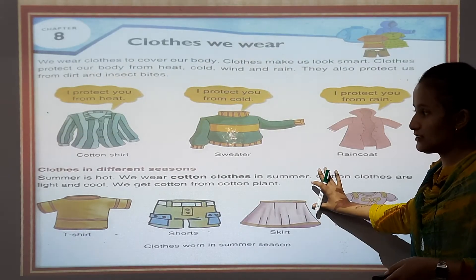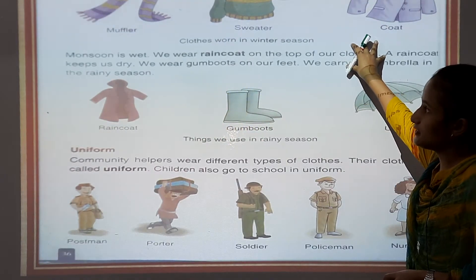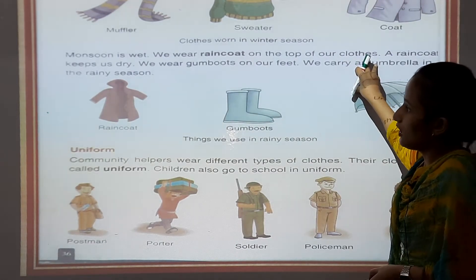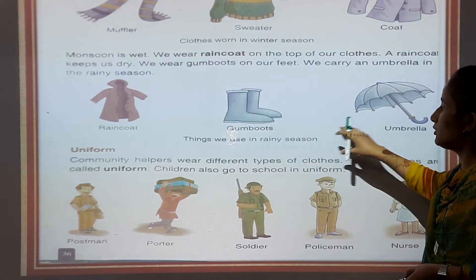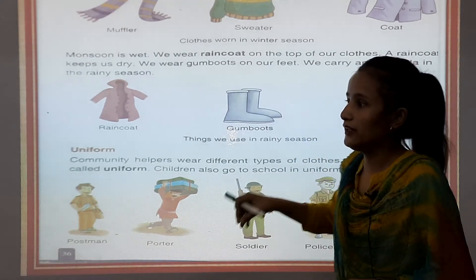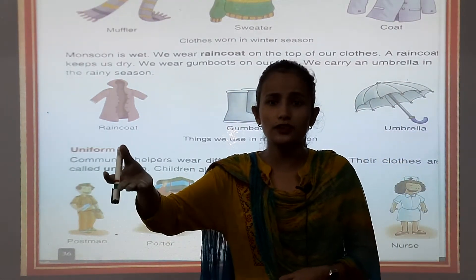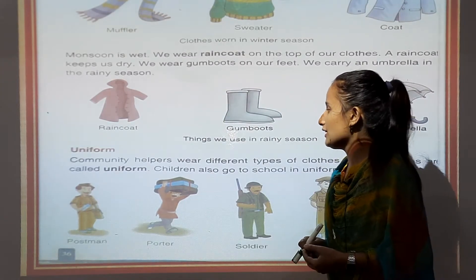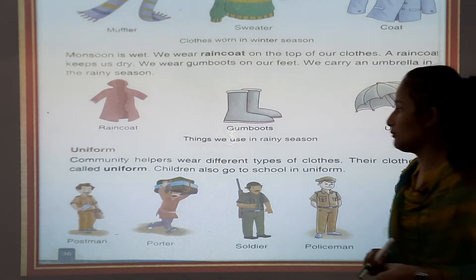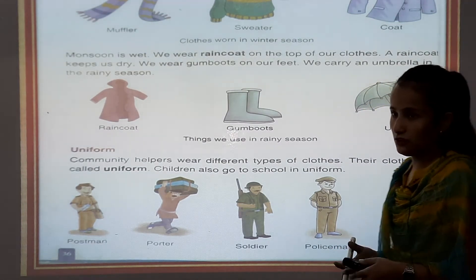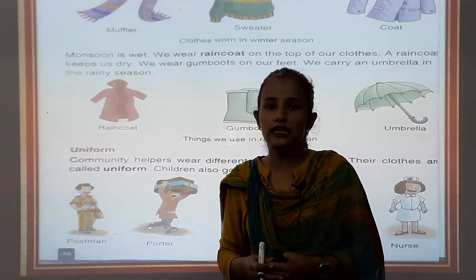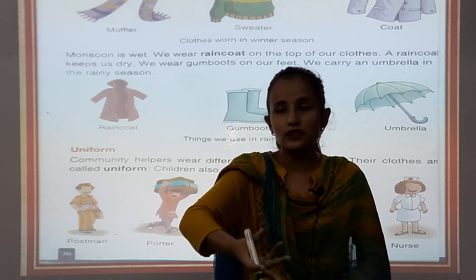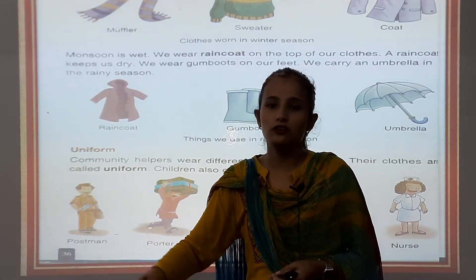In summer season we wear cotton clothes. In winter season we wear woolen clothes — woolen clothes give our body warmth and are heavy. In monsoon season we wear raincoat, gum boots and carry an umbrella. Uniform is the identity of a person — क्योंकि uniform से हम लोग को पता चलता है कि वह policeman हैं, nurse हैं, army में हैं, या nursing में हैं। Because of the uniform, we can identify who that person is.